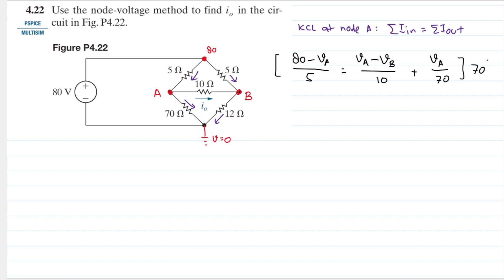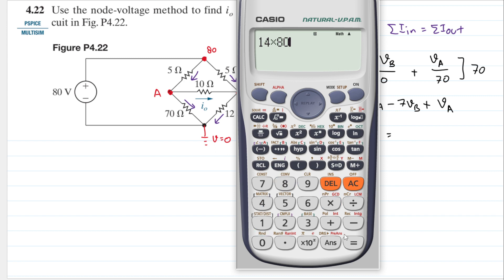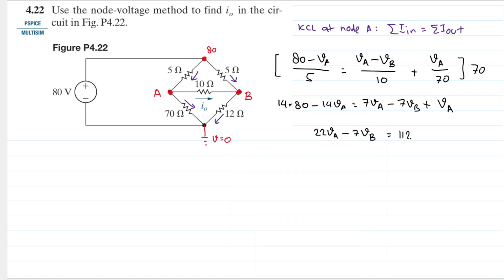We can multiply both sides by 70. 70 and 5 cancel into 14, so we get 14 times 80 minus 14Va. Then 10 and 70 cancel into 7, giving 7Va minus 7Vb. Plus 70 and 70 cancel, giving Va. Combining: 7 plus 1 is 8, 8 plus 14 is 22, so we have 22Va minus 7Vb equals 14 times 80, which is 1120. This is equation number one.